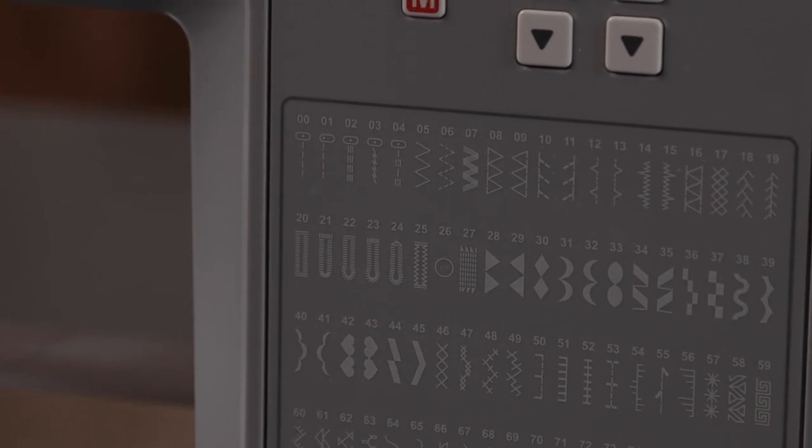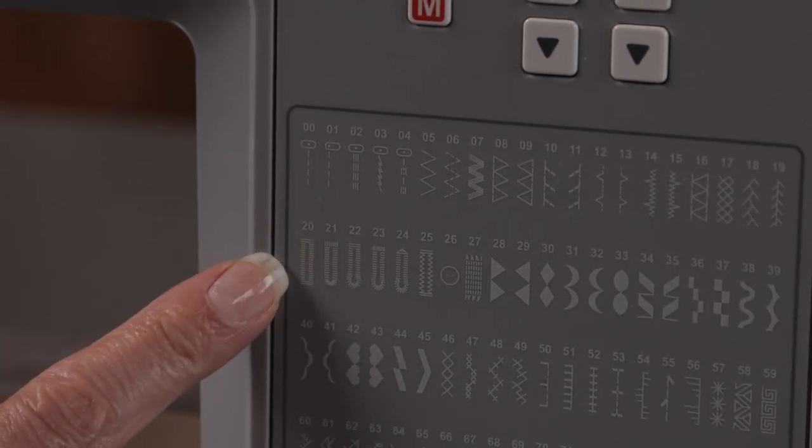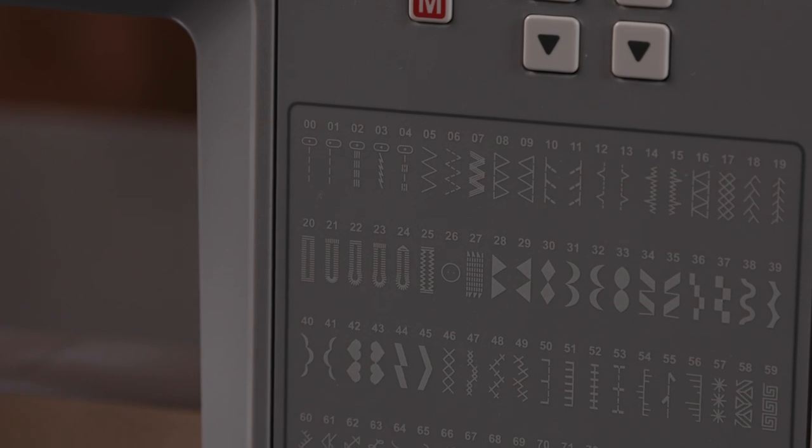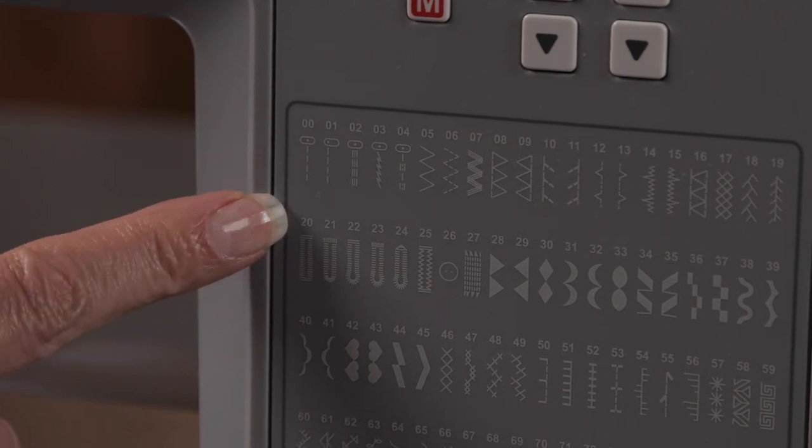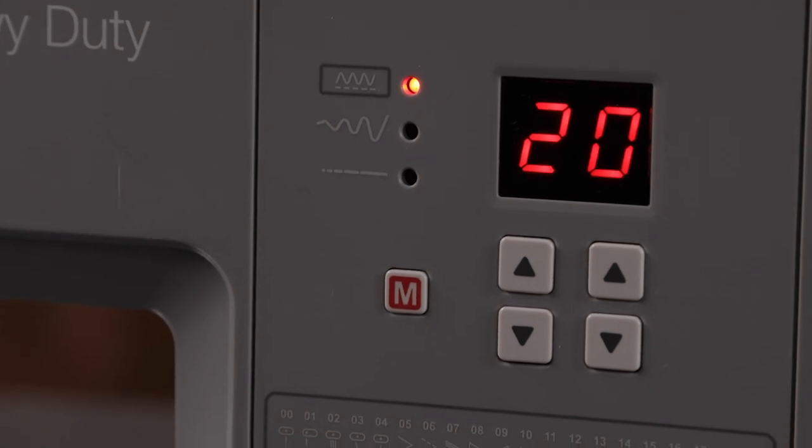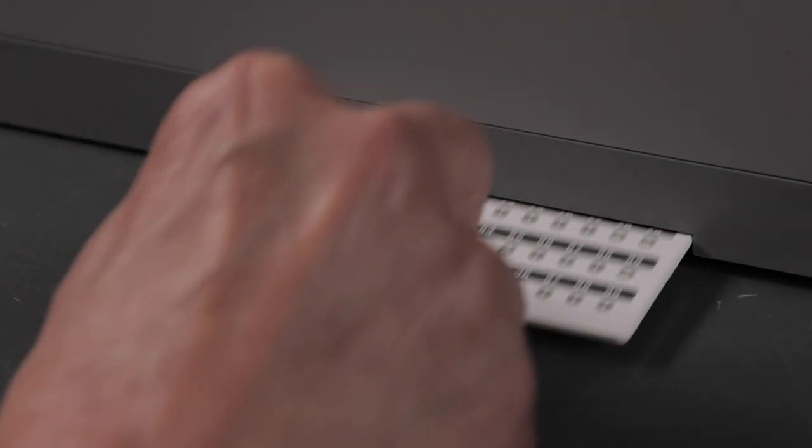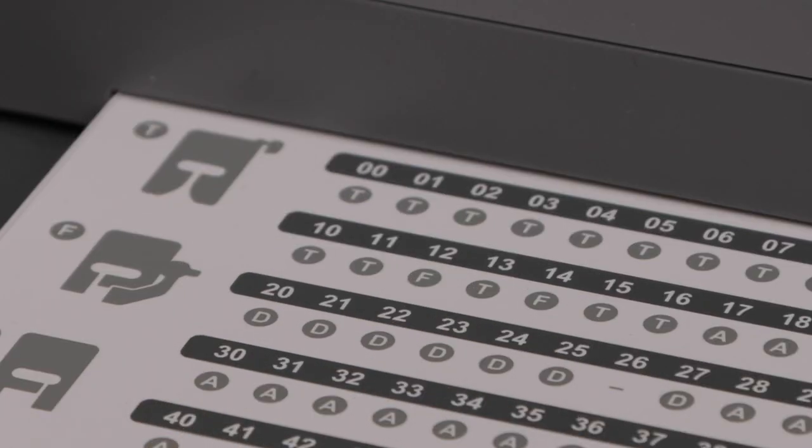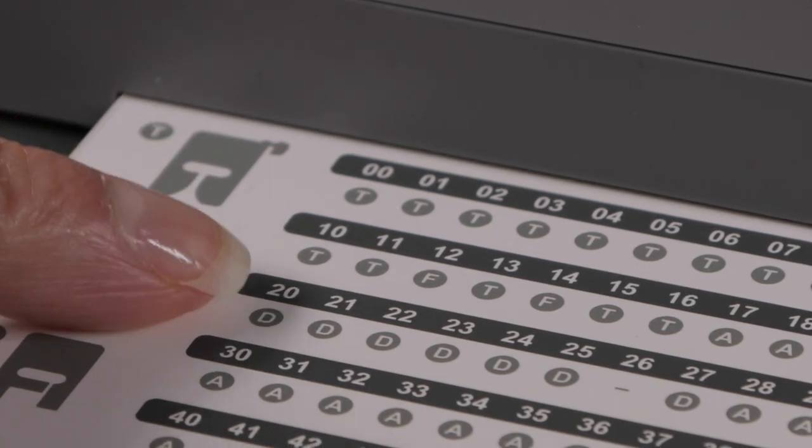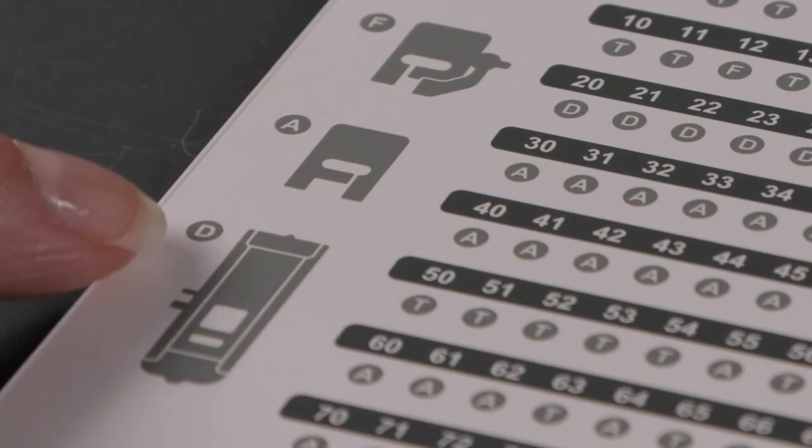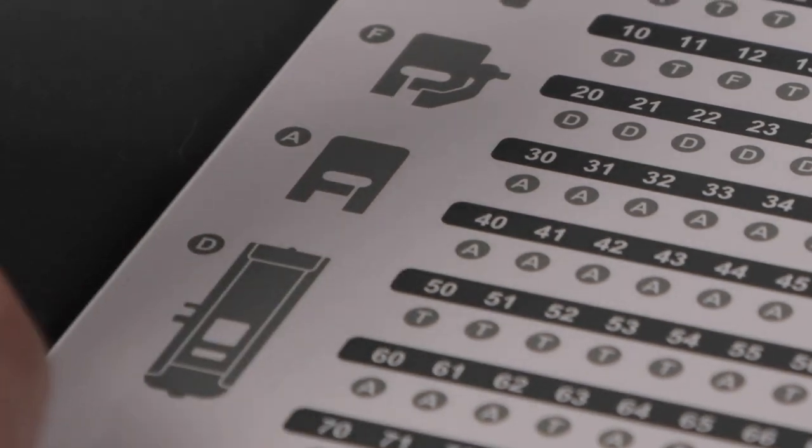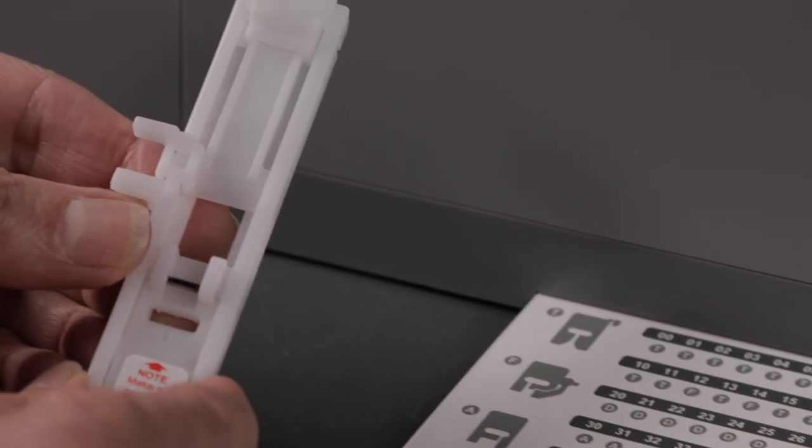I'm going to use the basic bar tack buttonhole to demonstrate how to sew a buttonhole, and I can see that's stitch number 20. I'll select stitch number 20, and when I pull out the presser foot recommendation chart, I can see for stitch number 20 that I need presser foot D. Here's presser foot D right here—it's my buttonhole foot, so that's the foot we'll use.